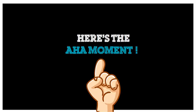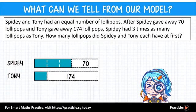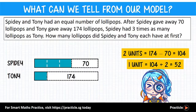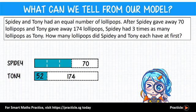Now that our model is complete, how would you use it to solve the question? From the model, we can tell that 2 units equals 174 minus 70, which gives us 104. Therefore, we can find the value of 1 unit by dividing 104 by 2, giving us 52. Once we know the value of 1 unit, we can find the number of lollipops each of them had at first. We could take 3 units plus 70, or 1 unit plus 174. Which method would you choose?